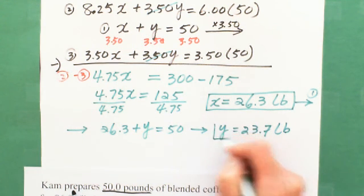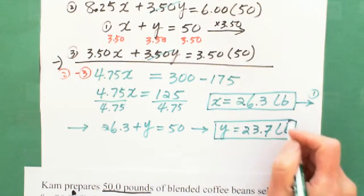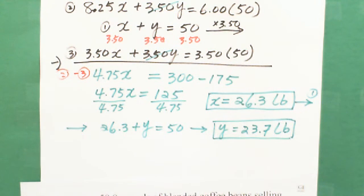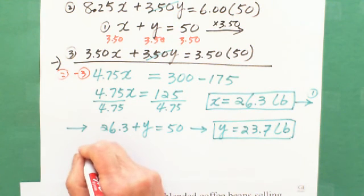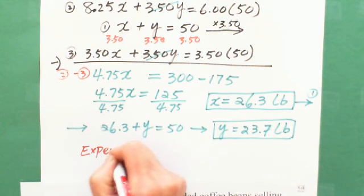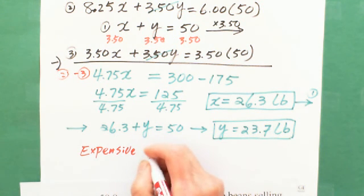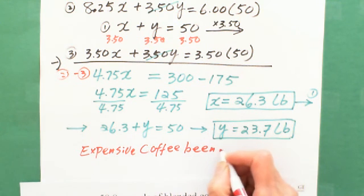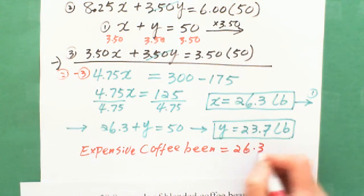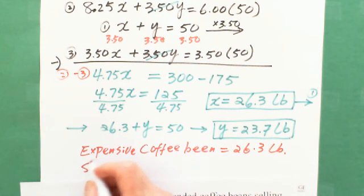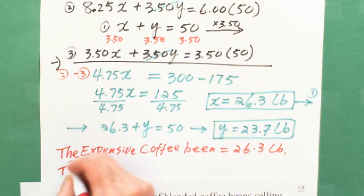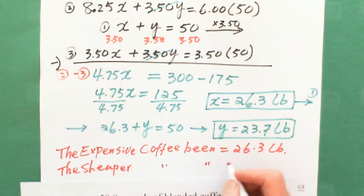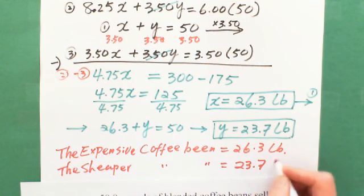So this is the answer. The expensive coffee bean is 26.3 pounds. And the cheaper coffee bean is 23.7 pounds.